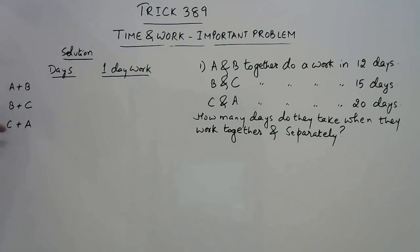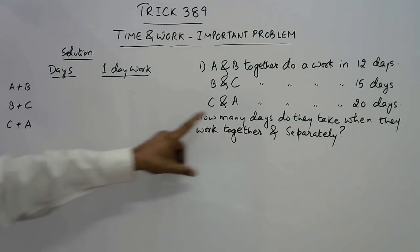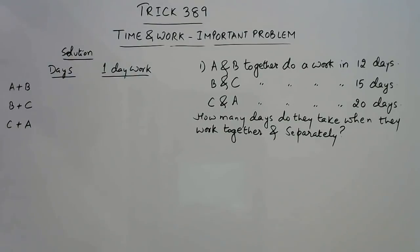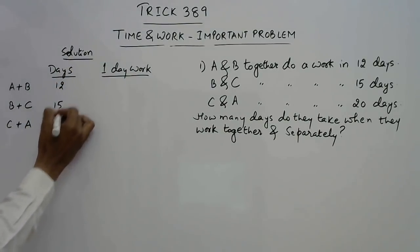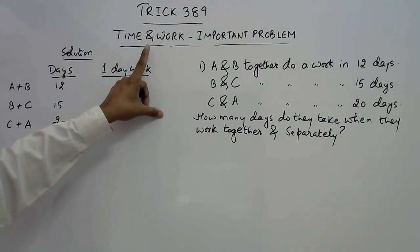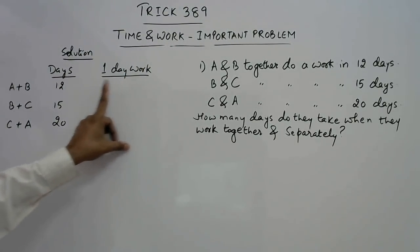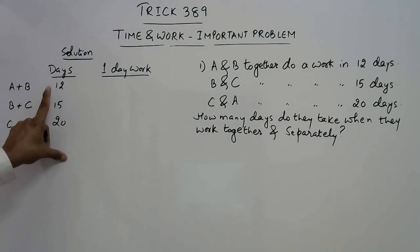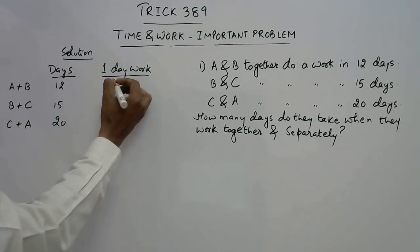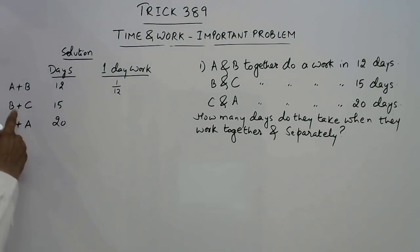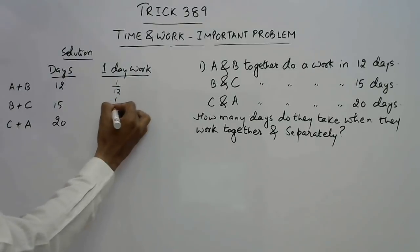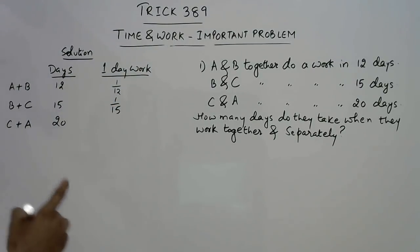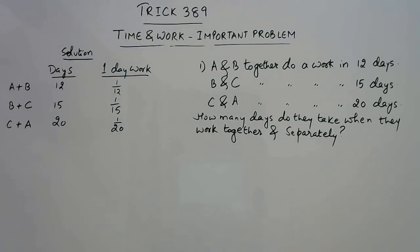The solution goes like this. I have made a matrix with A plus B, B plus C and C plus A — these are the 3 pairs given in the question — with number of days 12, 15 and 20 respectively. For time and work questions, we always calculate 1-day work by taking the reciprocal. So A and B together have 1-day work of 1/12, B and C have 1/15, and C and A have 1/20.